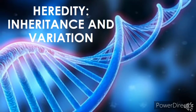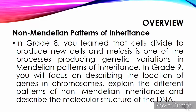Heredity, Inheritance and Variation: Non-Mendelian Patterns of Inheritance. In Grade 8, you learned that cells divide to produce new cells, and meiosis is one of the processes producing genetic variations in Mendelian patterns of inheritance. In Grade 9, you will focus on describing the location of genes in chromosomes, explain the different patterns of non-Mendelian inheritance, and describe the molecular structure of the DNA.